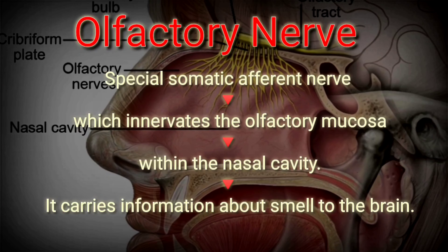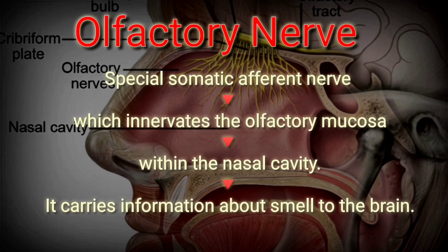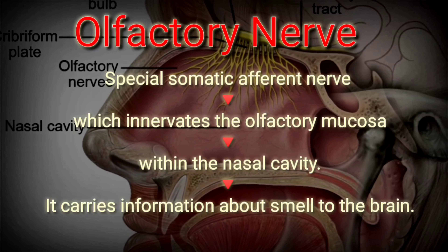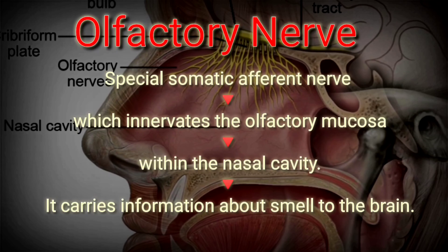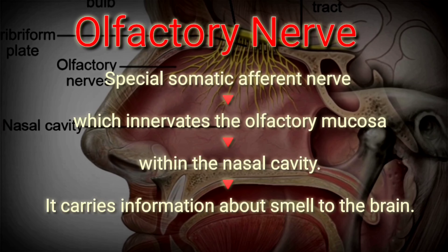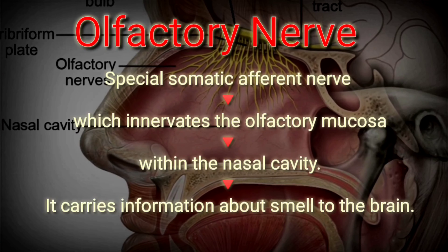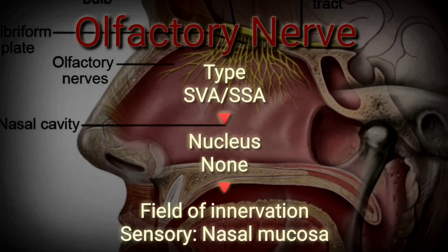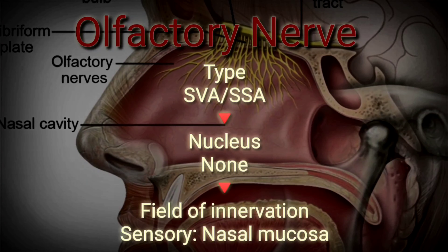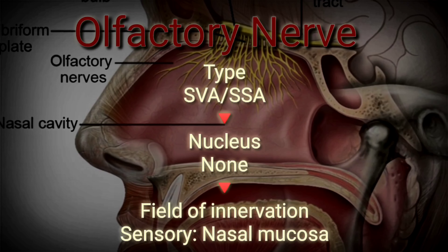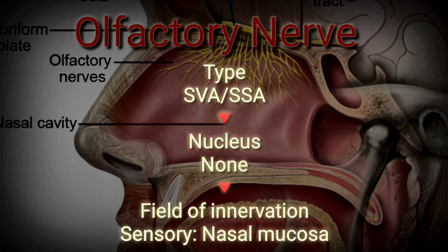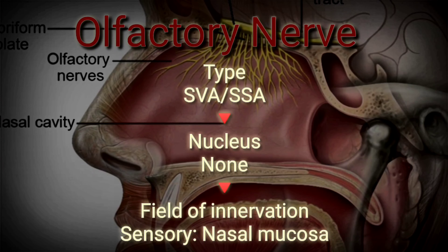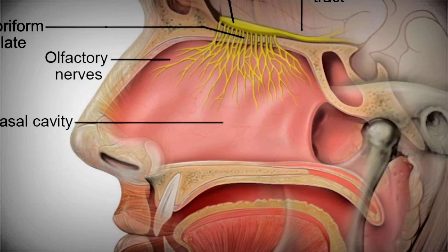Let's learn one by one. The first one is the olfactory nerve, or cranial nerve 1. It is a special somatic afferent nerve which innervates the olfactory mucosa within the nasal cavity. It carries information about smell to the brain. Type: SVA or SSA. Nucleus: none. Field of innervation: sensory — nasal mucosa.